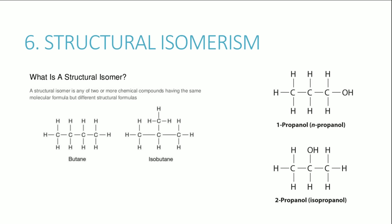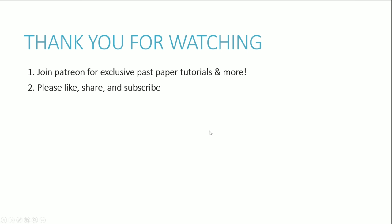Structural isomerism means molecules have the same molecular formula but different structures, due to how the carbons are attached. For example, butane is a single straight chain, whereas isobutane — a structural isomer — has carbons attached in a branched arrangement. The same applies to other organic molecule pairs.